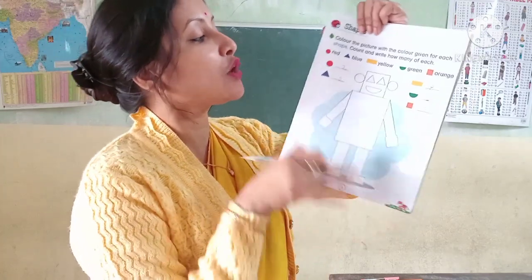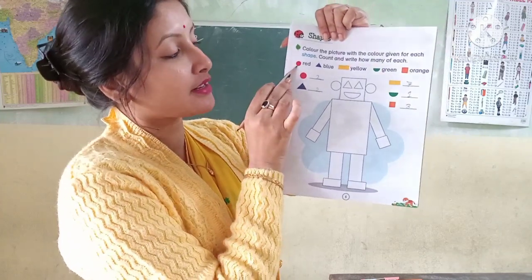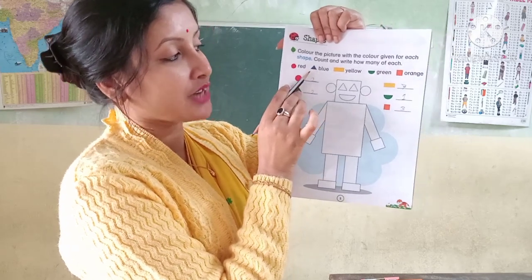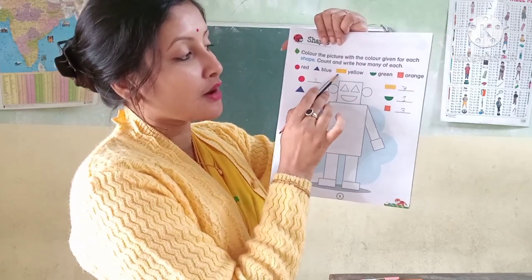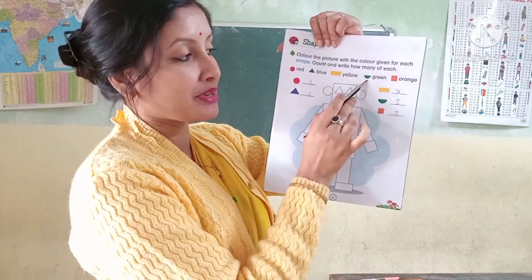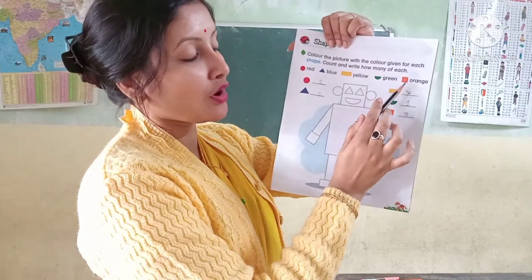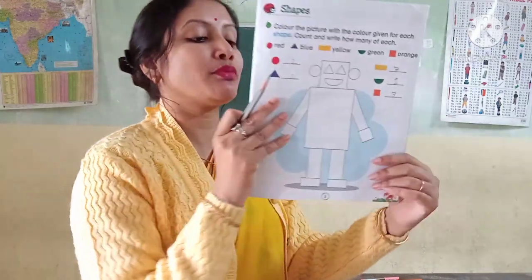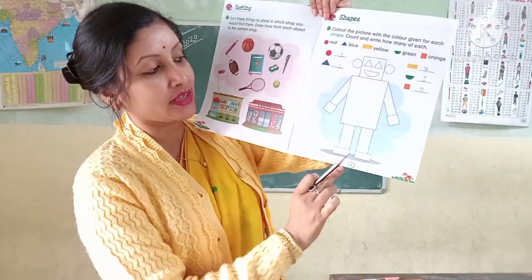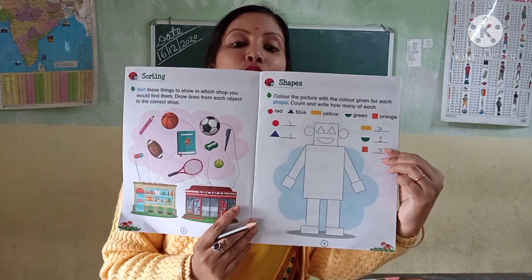After that, you have to put red color for circle, blue color for triangle, yellow color for rectangle, green color for semi-circle, and orange color for square. So you have to do these two pages — page number 4 and page number 5 in your numeracy practice book. This is your homework.